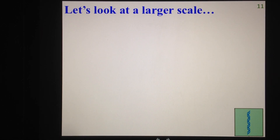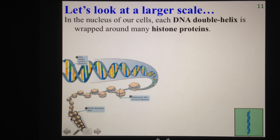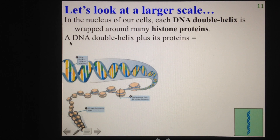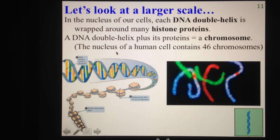Looking at a larger scale now: in the nucleus of our cells, each of our DNA double helices are actually wrapped around proteins called histone proteins. Our DNA double helix is first wrapped around these histone proteins just to package them up in a smaller package. Once we've made this string of beads, we can wind it together again to make an even more dense and thick cord — doing this again and again to make it very condensed. One DNA double helix plus all of the proteins it's attached to equals one chromosome.